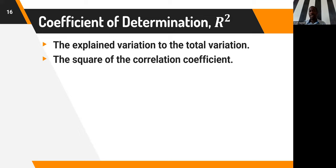To produce a correlation matrix for multiple variables, we still use the COR function, but this time we pass in our data frame containing all those variables. We can also produce a heat map to visualize the correlation matrix.